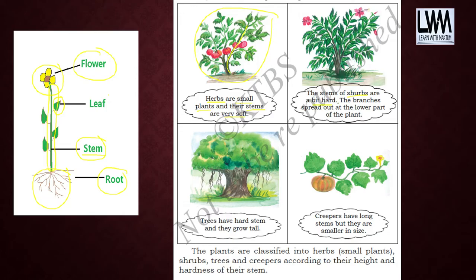Coming to the next one: shrubs. Shrubs have stems that are a bit hard, and their branches spread out at the lower part of the plant. In shrubs, at the lower part itself you are going to see the spread-out of branches, unlike trees where there is a main stem first and then branches appear higher up.